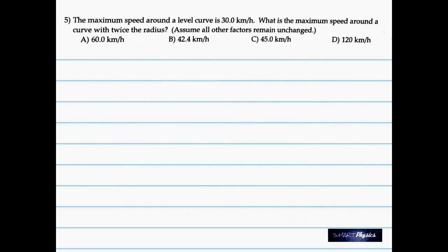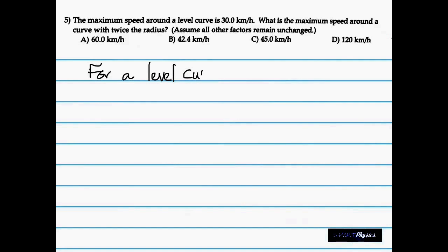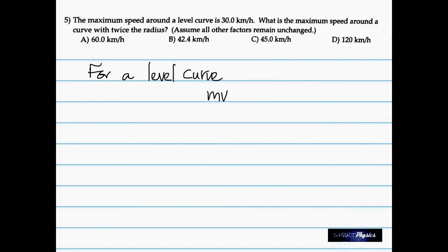Brings us to the fifth one. The maximum speed around a level curve is 30 km per hour. What is the maximum speed around a curve with twice the radius? Assume all of the factors remain unchanged. So now we need to have a relation between speed and radius. And of course we do. We know it's a level road. So when it goes around the curve, it's only friction that is keeping the automobile on the road.